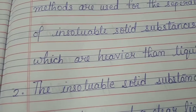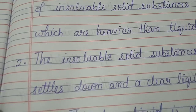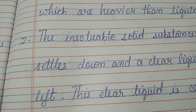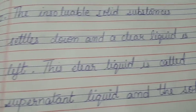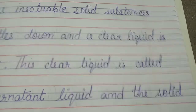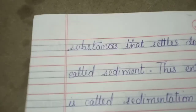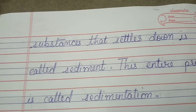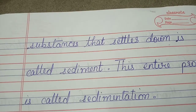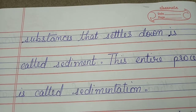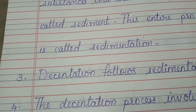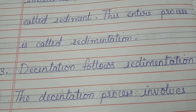The insoluble solid substances settle down and a clear liquid is left. This clear liquid is called supernatant liquid, and the solid substances that settle down is called sediment. This entire process is called sedimentation. Decantation follows sedimentation.